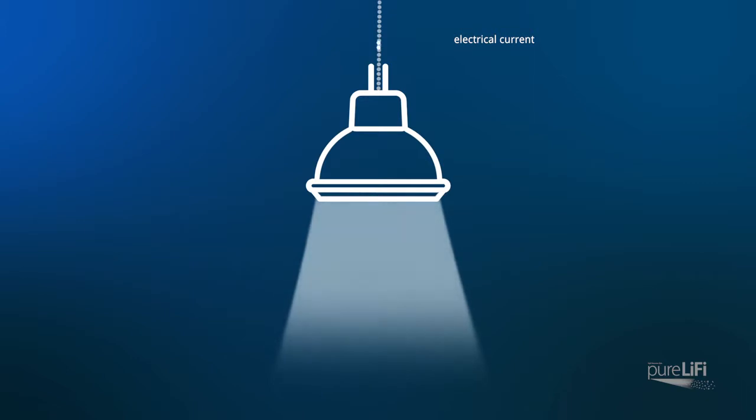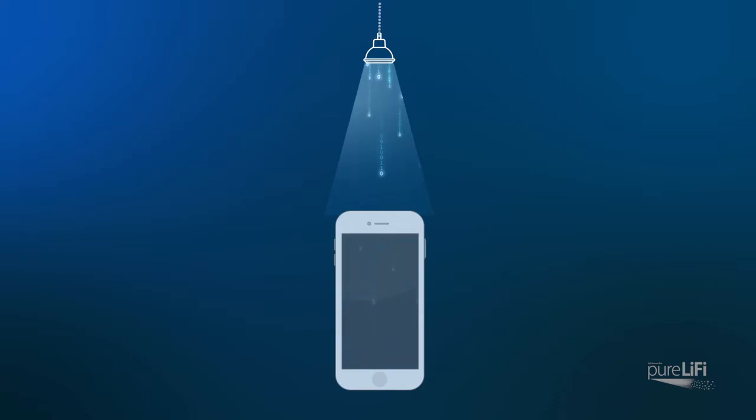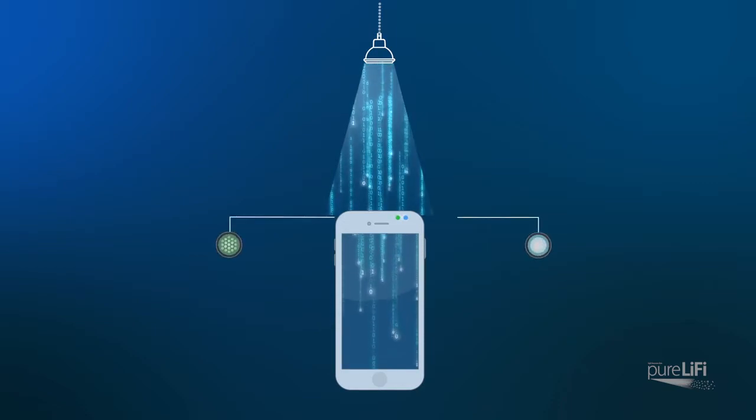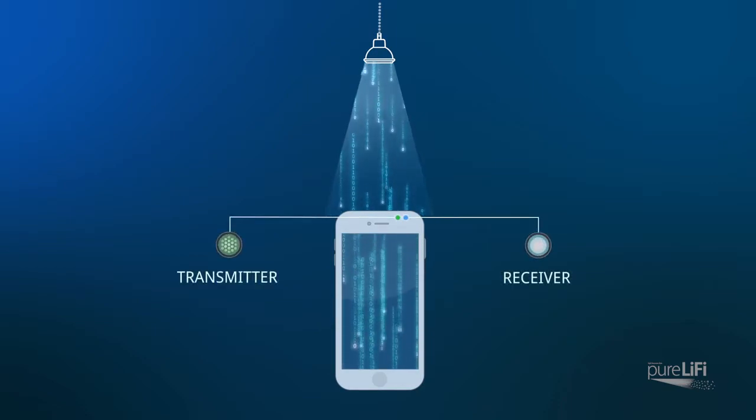Since LED bulbs are electronic devices, the current, and therefore the light, can be modulated at extremely high speeds. This can be detected by a photo detector and converted back to electrical current, therefore carrying data.